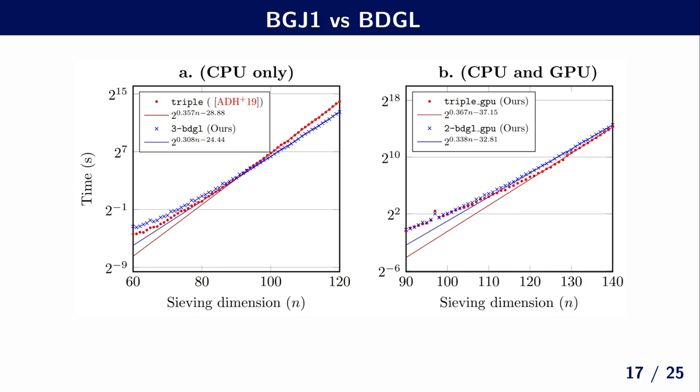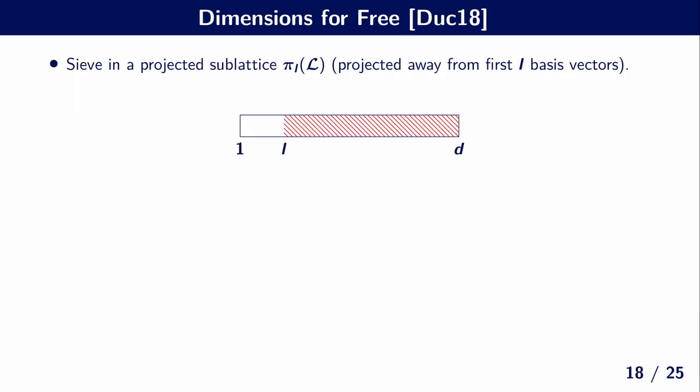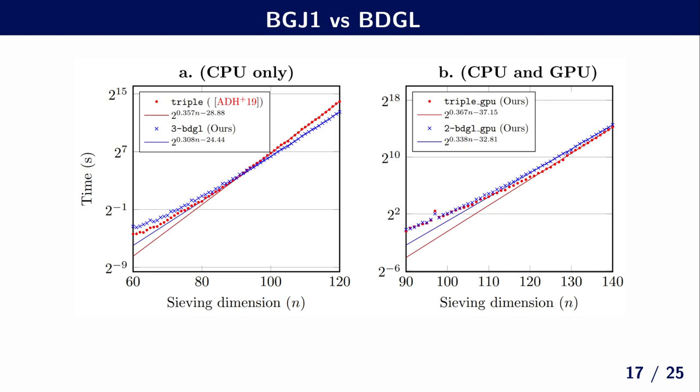However, for the GPU, we have these minimal bucket sizes to get optimal performance. And as a result, the BGJ1 implementation is actually faster than the BGL implementation in all the dimensions that we actually could sieve. And we estimate that the crossover point is maybe only at dimension 150 or 160, the sieving dimension here. So here we see a significant difference between the CPU implementation and the GPU implementation, that we get different trade-offs and a different crossover point for when these asymptotic best sieves actually take over from the more practical, but asymptotically worse sieves.